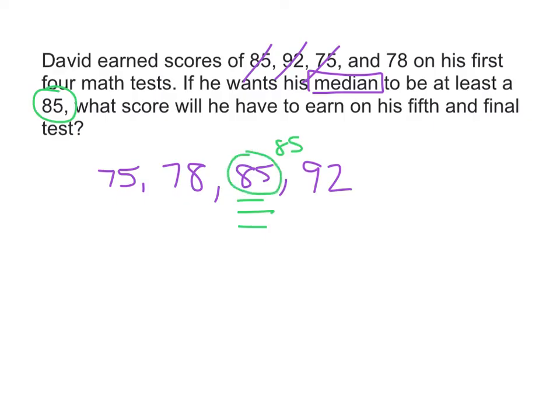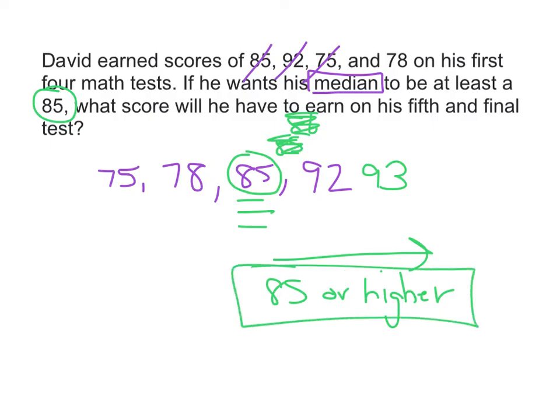If he earned an 86, that number would go here, and this would still be the biggest number. If he earned something bigger than 92, like 93, then 85 is the bigger number. So as long as he earns something 85 or higher, that's going to mean that 85 is going to be the median. So that's what the answer is. He's got to get an 85 or higher.